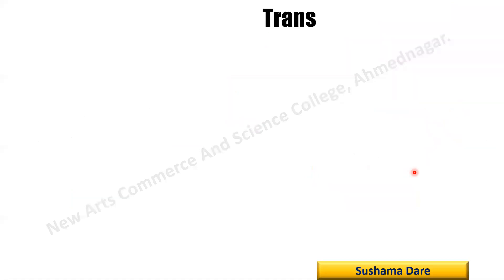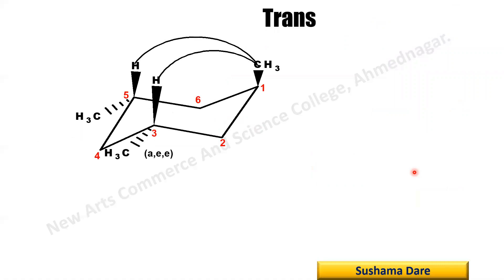Now let us start with the trans molecule. In case of the trans molecule, in the planar structure, one methyl group is beta while the remaining two are alpha. Draw the chair conformer and number it 1 through 6. At carbon 1, the bond is up — that is an axial bond. At carbons 3 and 5, the bonds go downward — those are equatorial. So this conformer is named AEE: one methyl group is axial while the remaining two are equatorial.